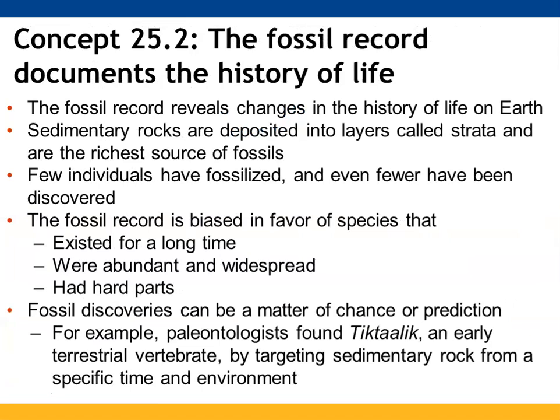The fossil record documents how life has changed on Earth over time. Sedimentary rocks get deposited into strata layers, and they are the primary source of fossils. Very few individuals have fossilized, and of those that have, even fewer have been identified. The fossil record is biased in favor of species that existed for an extended period of time, were abundant, widespread, and had hard parts capable of being fossilized. Fossil discoveries can be a matter of chance or due to prediction.